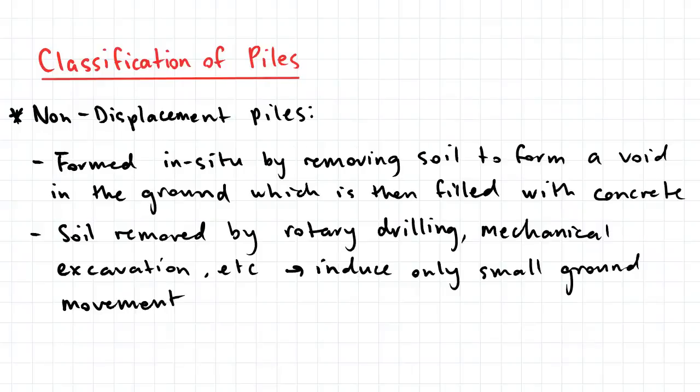Non-displacement piles are formed in situ by removing soil to form a void in the ground which is then filled with concrete or grout. The soil may be removed by rotary drilling, mechanical excavation or other methods. These methods induce only small ground movement.